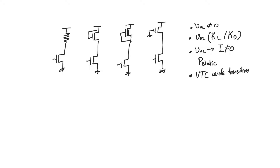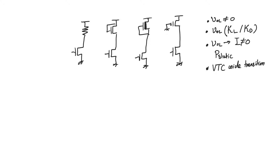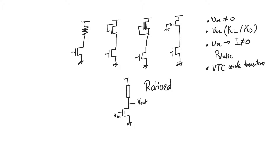These disadvantages actually have to do not with the kind of load used. A passive load consumes a lot of area, so we tried an active load. The enhancement load caused us to lose a V-threshold in V-output-high. But even with other loads, we still couldn't achieve V-output-low equals zero volts. Any family with a driver-and-load architecture is going to suffer from these disadvantages, and such families are called ratioed logic families.